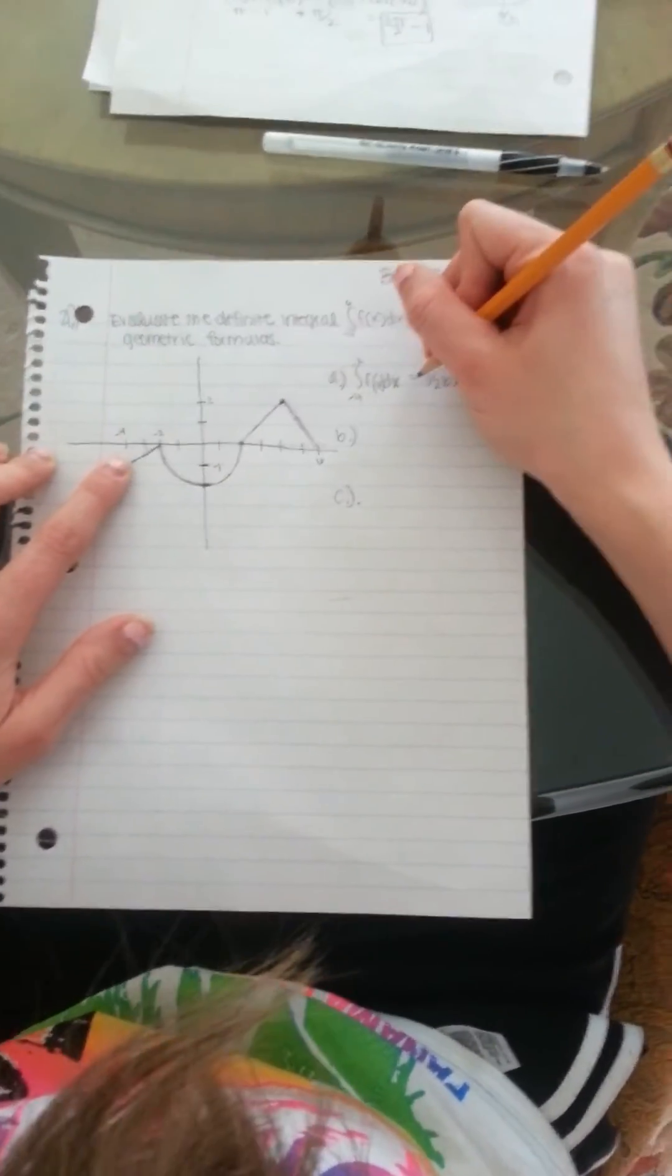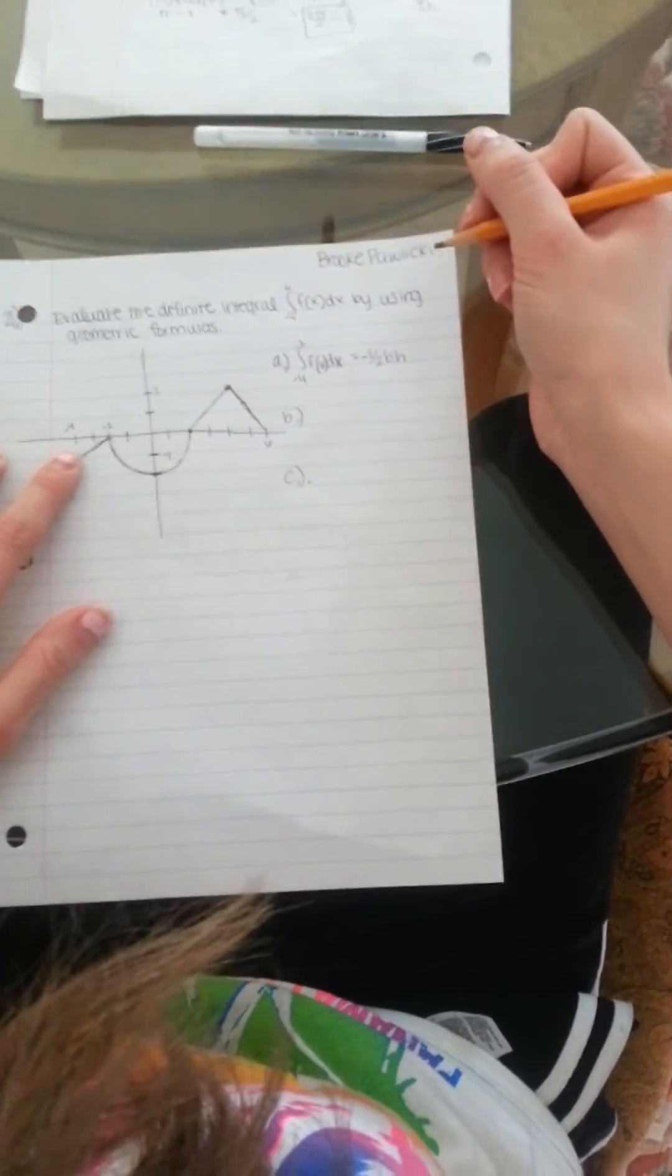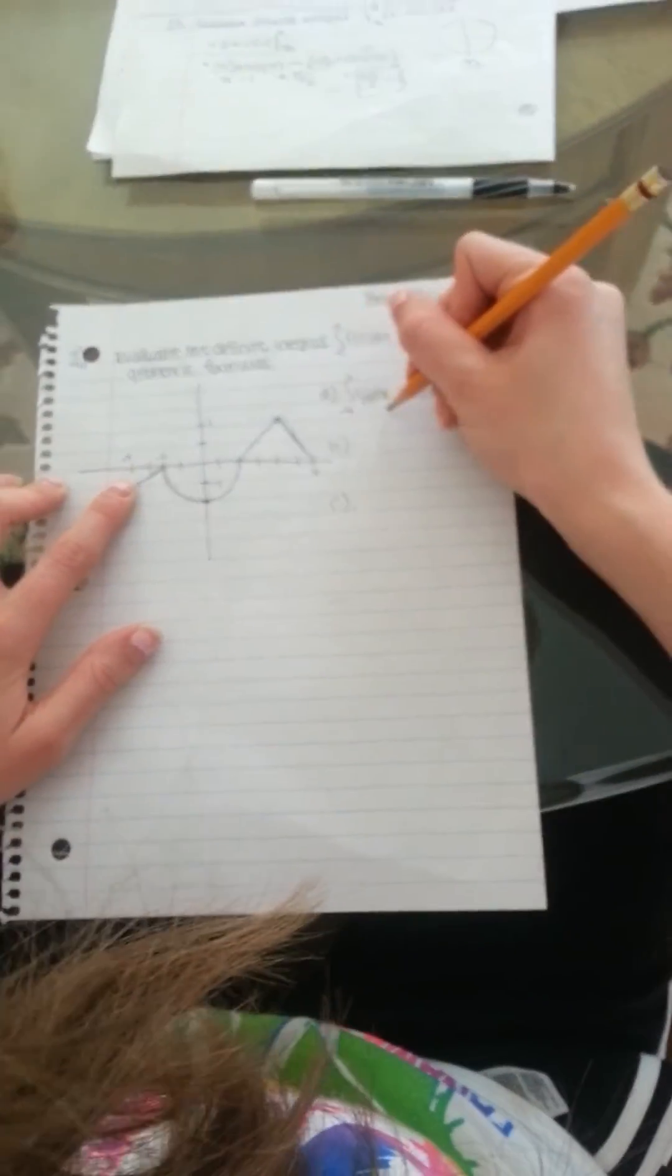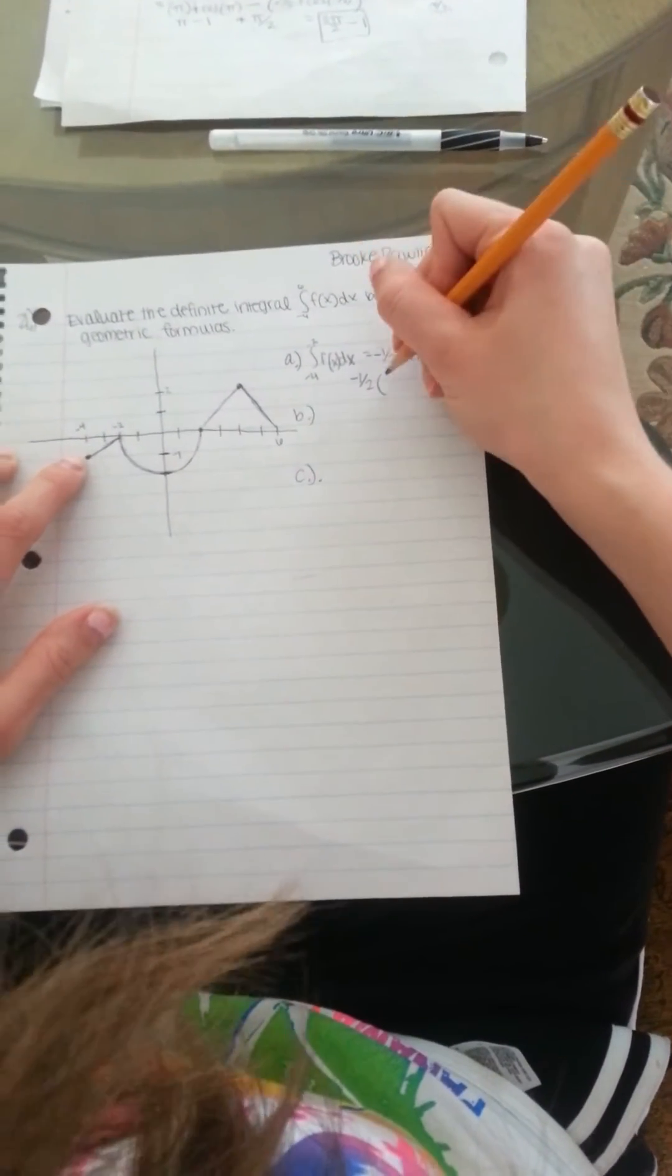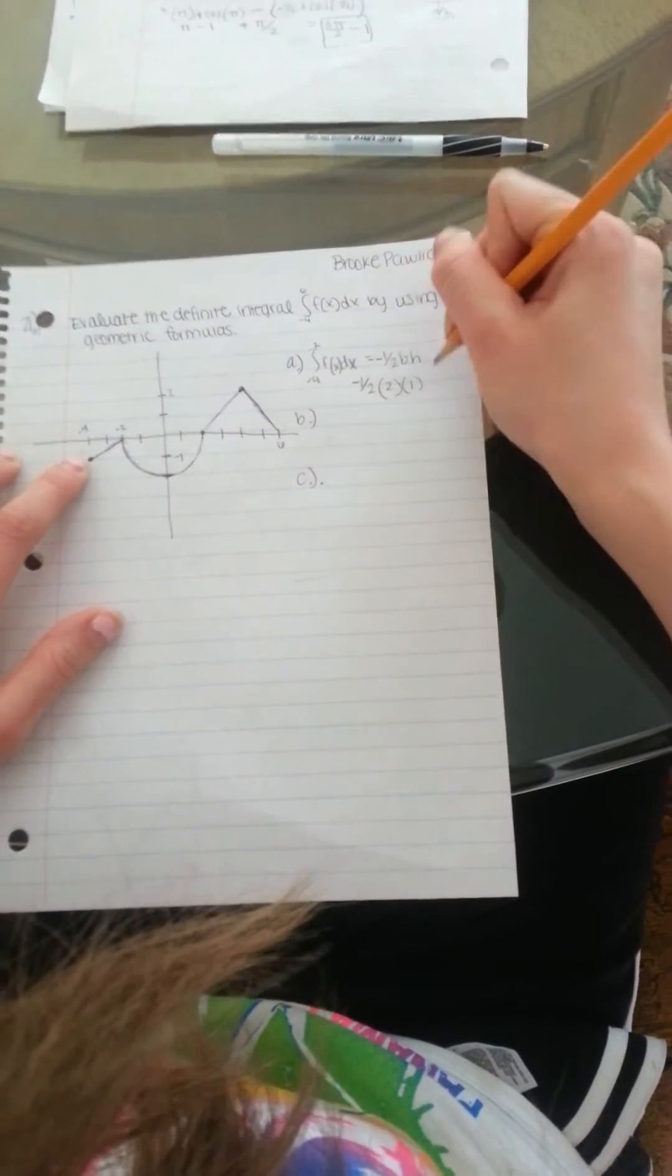And since it's below the x axis it's going to have a negative 1 half base times height. And then I'm just going to fill in the base which is 2 and the height which is 1 and that's going to give me negative 1.